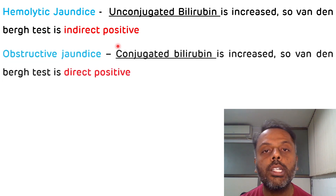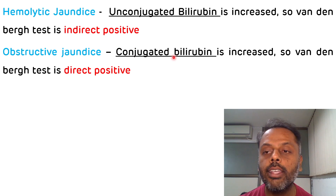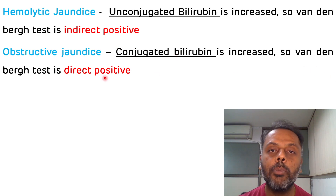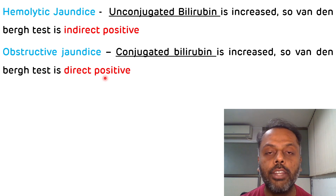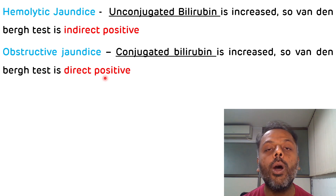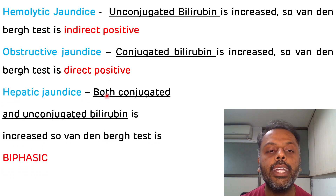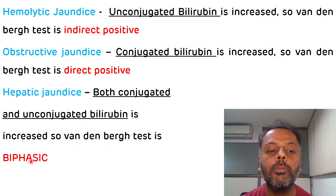In obstructive jaundice, conjugated bilirubin is increased, so the Van den Bergh test will be direct positive — it gives a direct reaction. But in hepatic or hepatocellular jaundice, both conjugated and unconjugated bilirubin are increased, so the Van den Bergh test will be biphasic.